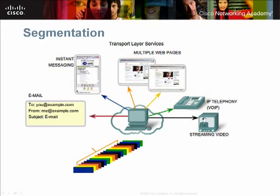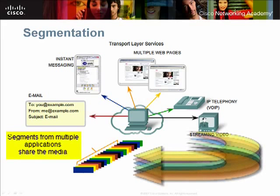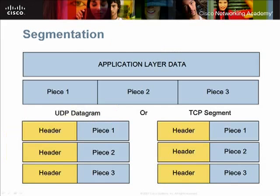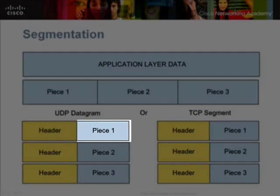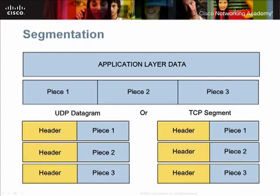The transport layer maintains these communication streams by dividing the application's data into small parts called segments and interleaving these segments across the network media. To identify each segment of data, the transport layer adds a header to each segment that contains a unique number. These numbers are also used for reassembling the segments at the destination host.